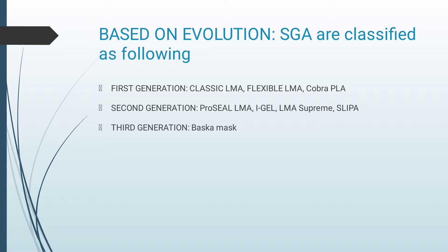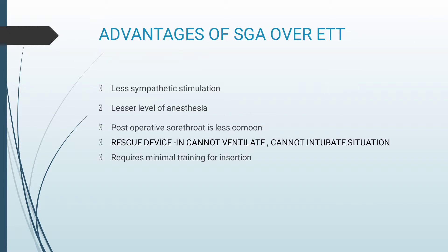To name a few: in 1st generation, Classic LMA and Flexible LMA; 2nd generation has ProSeal LMA, i-gel, LMA Supreme, and Slipa; and 3rd generation has Baska mask. A supraglottic airway device should protect the supraglottic airway from upper airway secretions and gastric contents. Advantages over endotracheal tube include: less sympathetic stimulation, lesser chances of postoperative sore throat, it can be used as a rescue device in cannot-ventilate-cannot-intubate situations, and insertion requires minimal training.